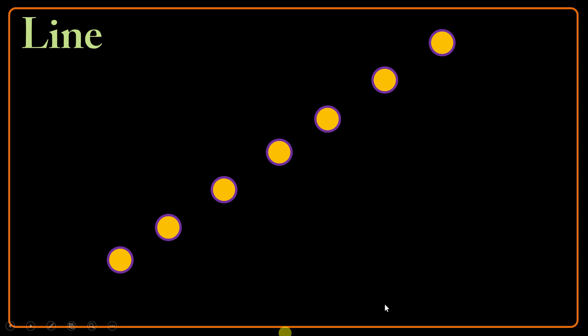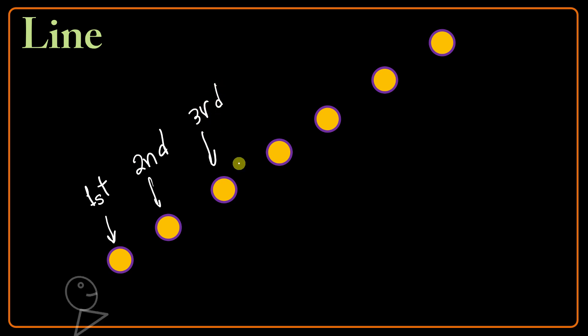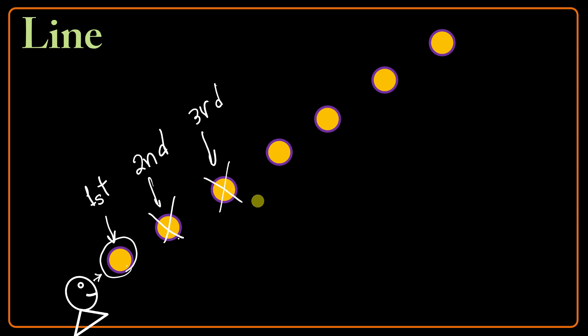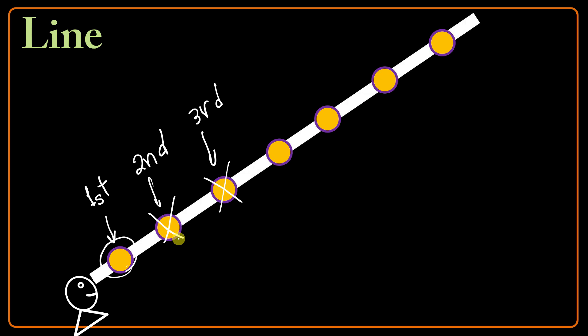Let's see how the line is made. Suppose that I have a special arrangement of some points. Let's name this one the first point, this one the second point, this one the third point, and so forth. From this location, I can see the first point, but the second point is behind the first one and I cannot see that. All the other points are behind the first one. So if I connect those points, I can make a straight line. This is how the straight line is made.